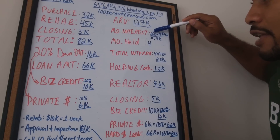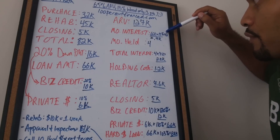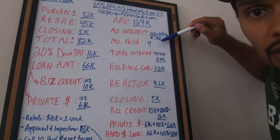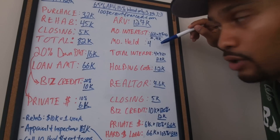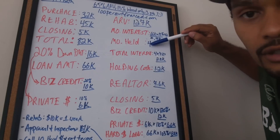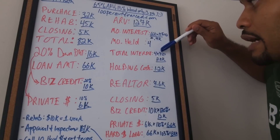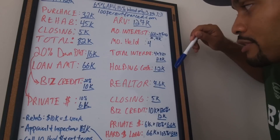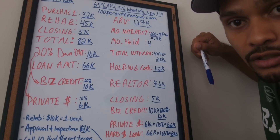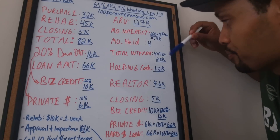The monthly interest on the hard money loan: $66,000 × 13% ÷ 12 months = $715/month, or roughly $700/month. That's $700 a month interest-only to borrow $66,000. At four months to sell, that's 4 × $700 = $2,800 in hard money interest costs.